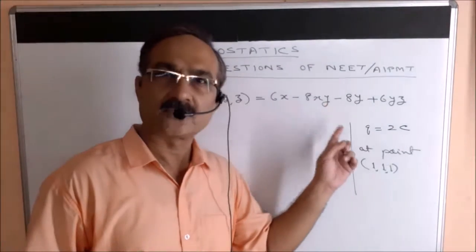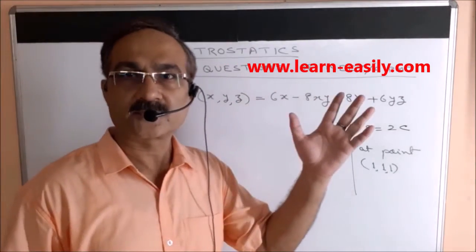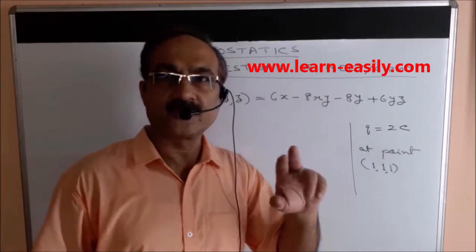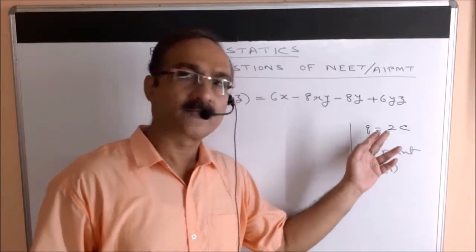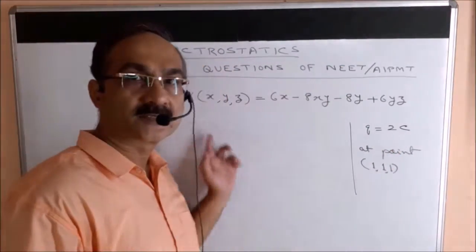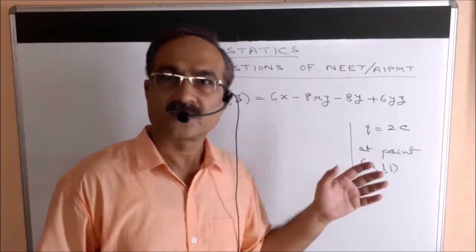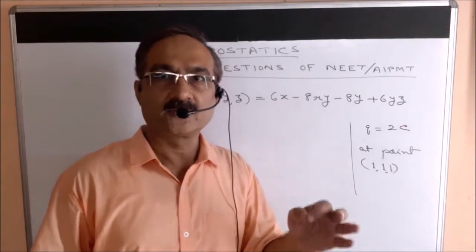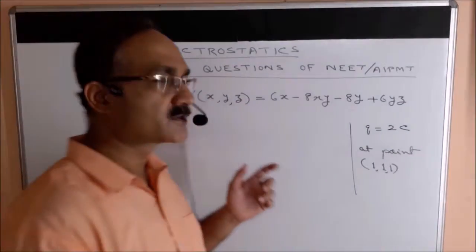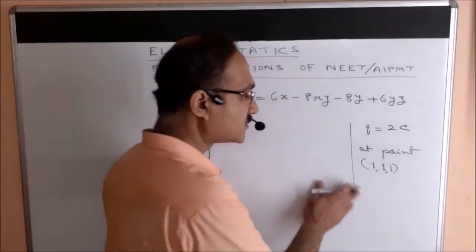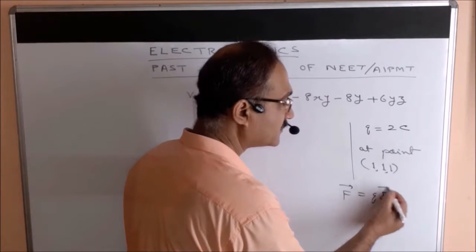To find the force on the charge, we consider the available formulas. Formula one is Coulomb's law, but that applies to point charges. Here the other charge is not given, so Coulomb's law cannot be applied. The next formula to consider is formula number 8: F = QE, the force on a charge placed in an electric field.